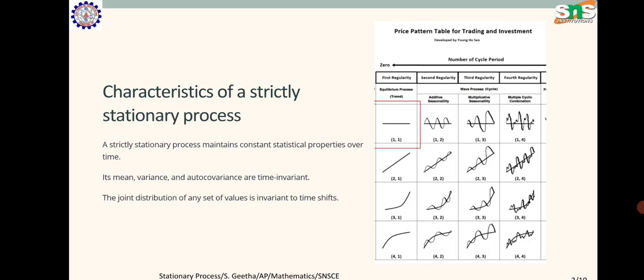Characteristics of strictly stationary processes. A strictly stationary process maintains constant statistical properties over time. Its mean, variance, and autocovariance are time invariant. The joint distribution of any set of values is invariant to time shifts.